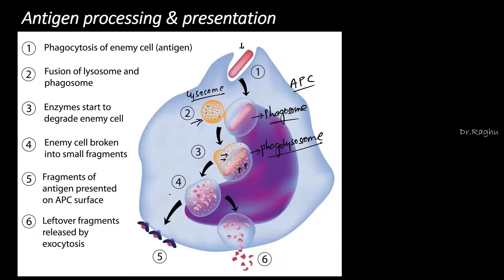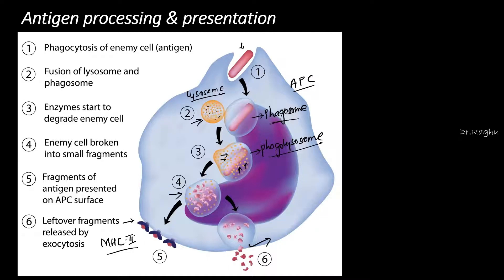By the action of these enzymes, the antigen is broken down into smaller antigenic fragments. Many of the leftover fragments are thrown out of the cell by exocytosis, but a few of them bind to complexes present on the cell surface called the major histocompatibility complex. Since this is an antigen presenting cell, the major histocompatibility complex here is MHC class 2, and this antigen bound to MHC 2 will now be presented to the B lymphocyte.